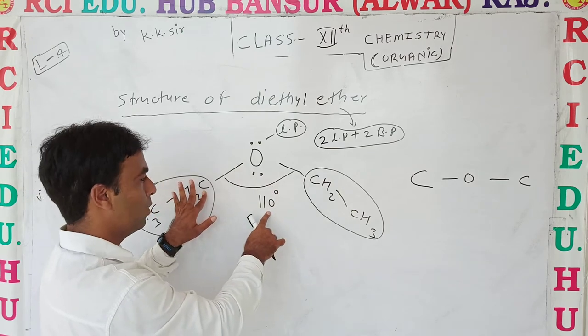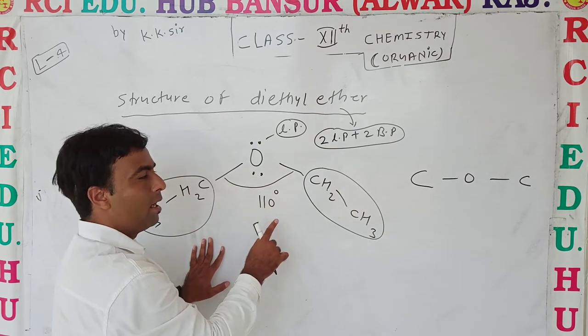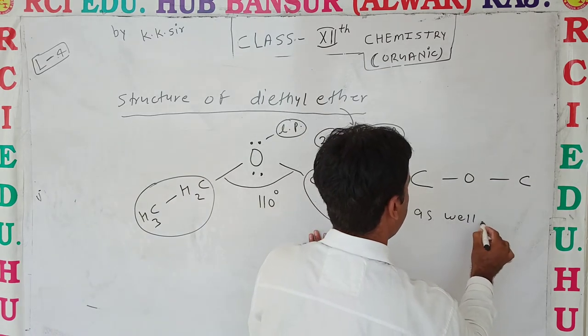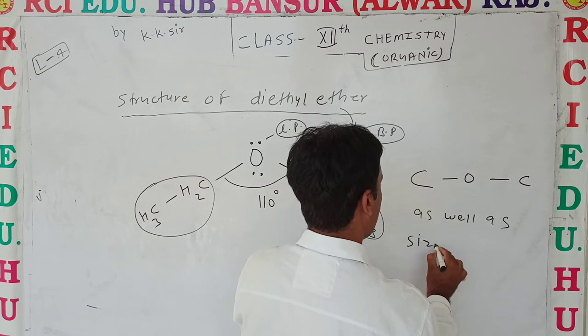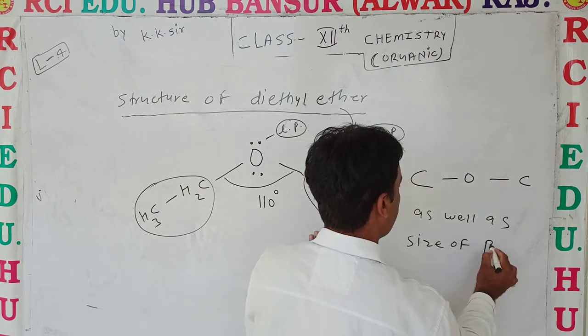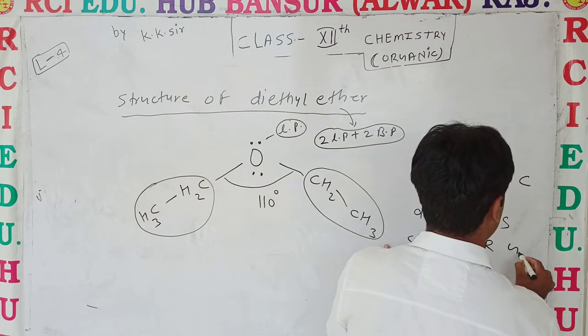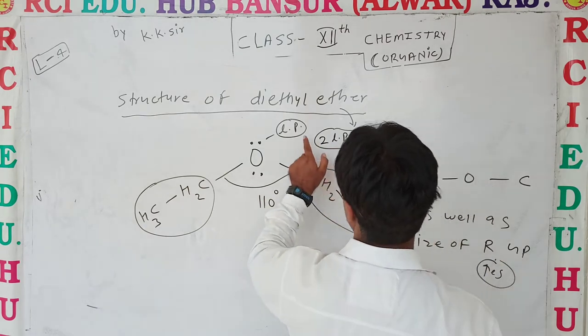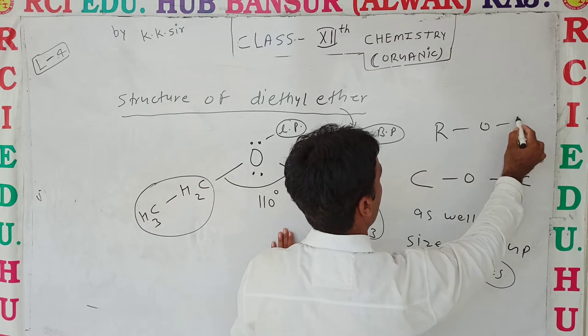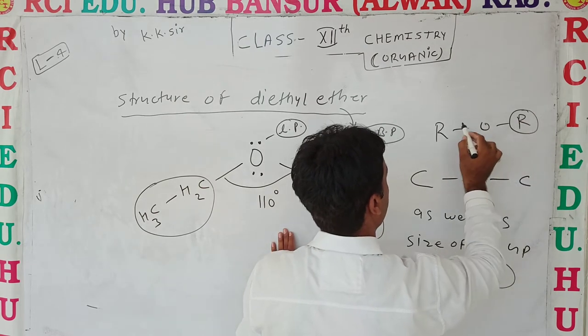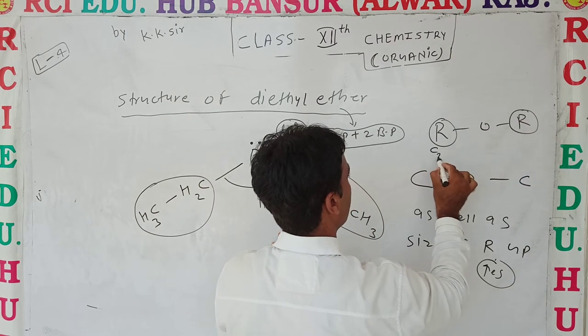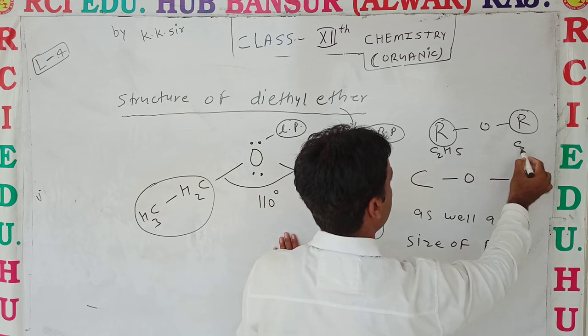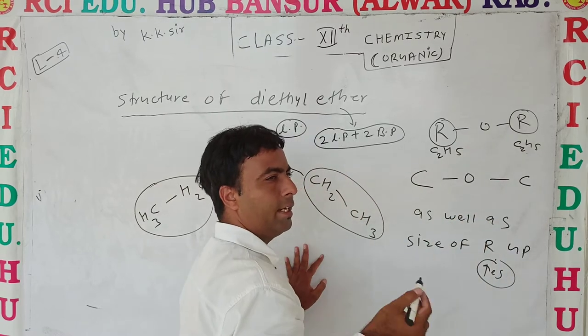As well as the size of R group increases - in this type structure we represent R-O-R. If we use C2H5 or larger groups like C3H7, etc., with more carbons, then as size of R group increases, bond angle also increases.